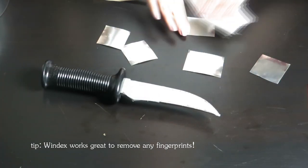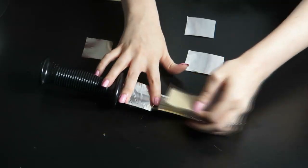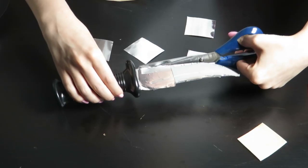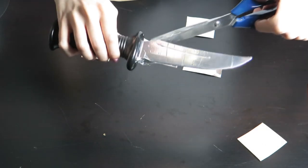Try not to handle the tape too much once you peel it off the paper. The adhesive is very sticky and the foil is delicate. The slightest bend or crease will be noticeable and hard to remove.